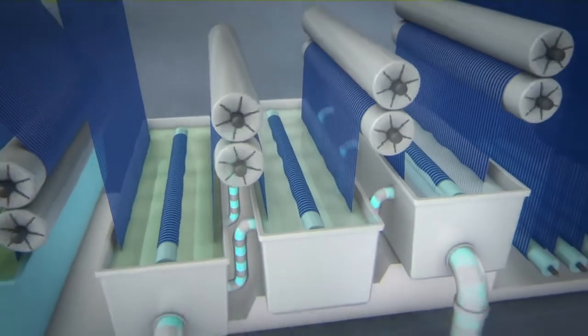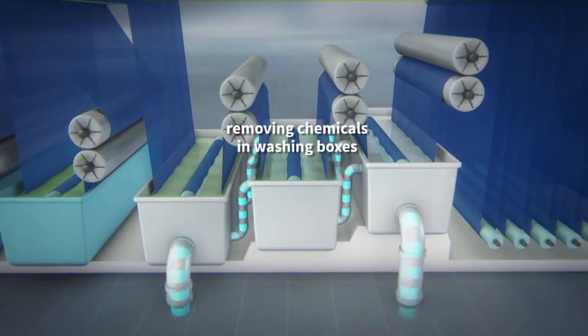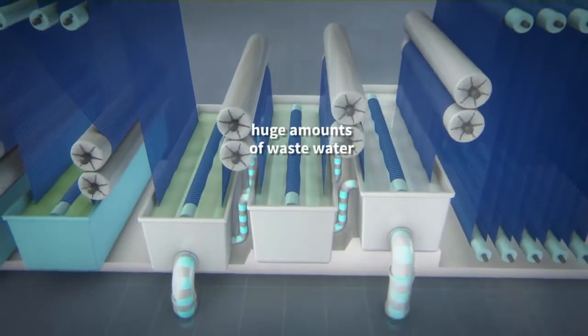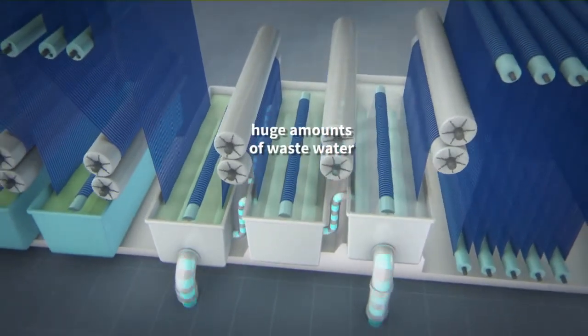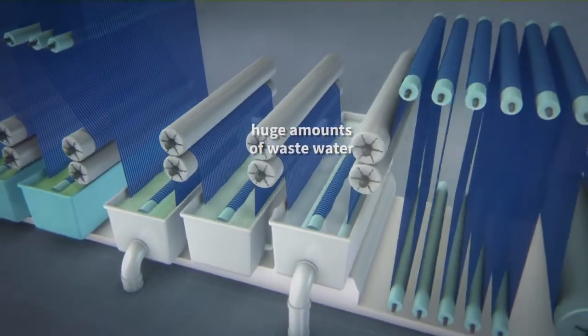The next step removes the chemicals previously added for cleaning and reduction, as well as the unbound indigo, in several washing boxes. This produces large volumes of colored wastewater contaminated with sulfites, which adversely impact the aquatic ecosystem.